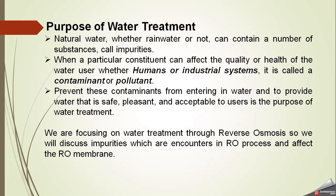Imagine that natural water, whether rainwater or not, can contain a number of substances called impurities. When a particular impurity constituent can affect the quality or health of the water user — whether human beings or industrial systems like boilers or cooling systems — it is called a contaminant or pollutant. Preventing these contaminations from entering water is the purpose of water treatment.